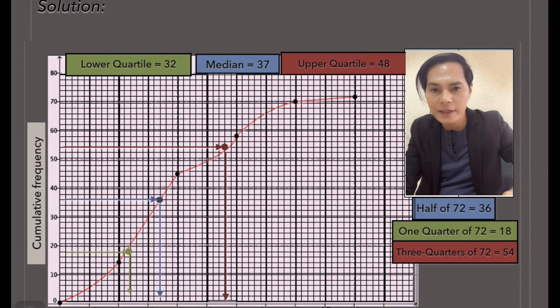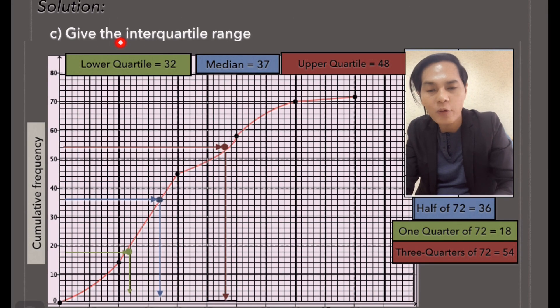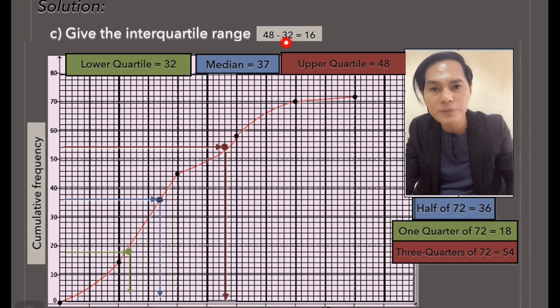And for letter C, the question is, give the interquartile range. So since we now have the upper and the lower quartile, which is 48 and 32, just subtract them. So our interquartile range is 16.